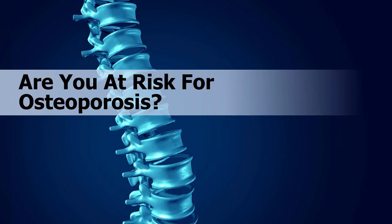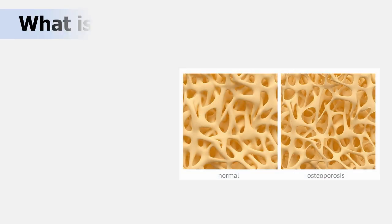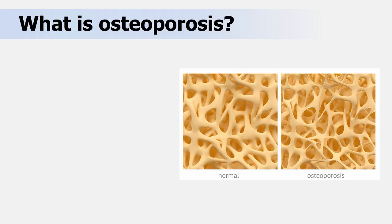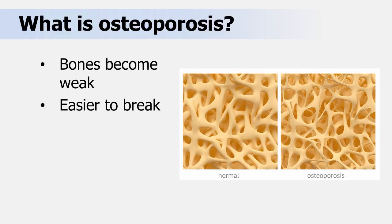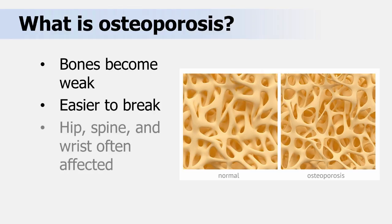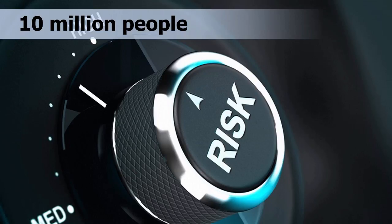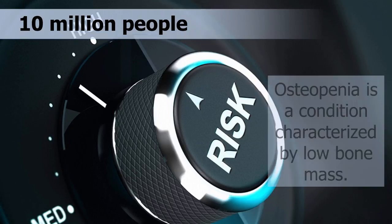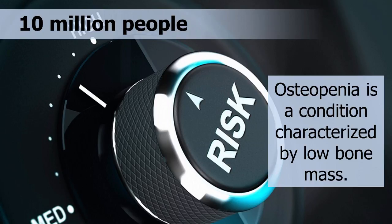Are you at risk for osteoporosis? Osteoporosis is a disease in which the bones become weak, making bones easier to break. Most often the bones in the hip, spine, and wrist are broken due to osteoporosis. In the United States, 10 million people have osteoporosis. Millions more have osteopenia, which is a condition characterized by low bone mass and is a risk factor for osteoporosis and broken bones.